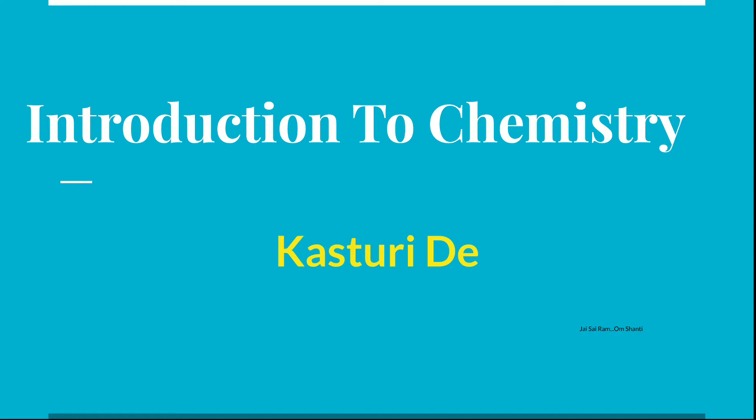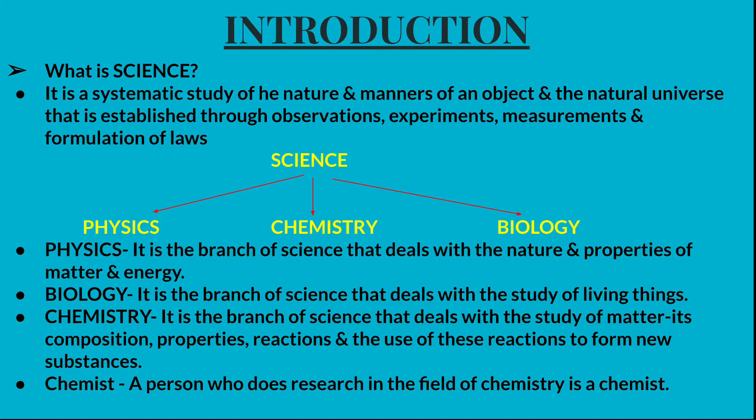Let me start with the introduction to chemistry. First, what is science? Science is a systematic study of the nature and manners of an object and the natural universe, established through observation, experiments, measurements, and formulation of laws. Science has three main branches: physics, chemistry, and biology.